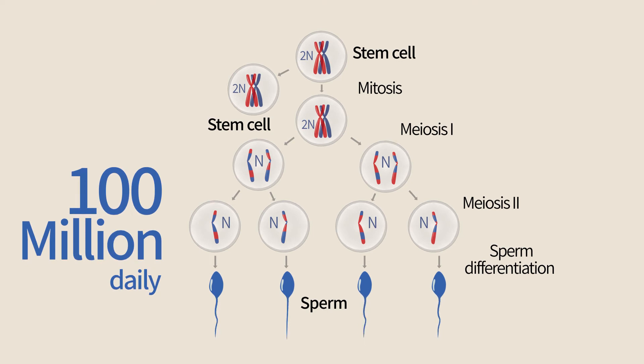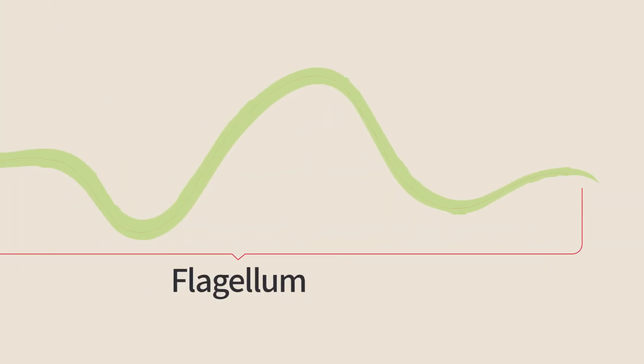Sperm cells are produced in the testicles from puberty on for the entire life of the male.